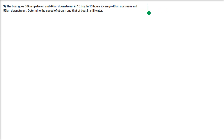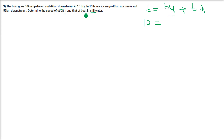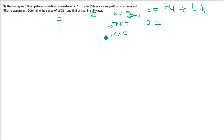A boat goes 30 km upstream and 44 km downstream in 10 hours. The total time equals time upstream (TU) plus time downstream (TD), which equals 10 hours. Let the speed of the boat in still water be X and the speed of stream be Y. Upstream speed will be X minus Y and downstream speed will be X plus Y. Time equals distance by speed, so TU is 30 by (X minus Y) and TD is 44 by (X plus Y).